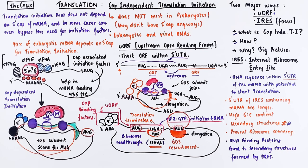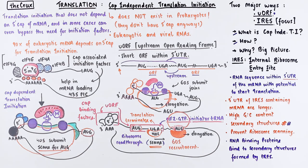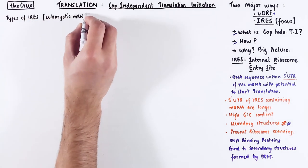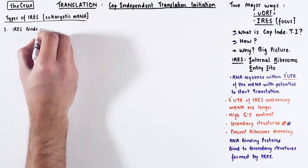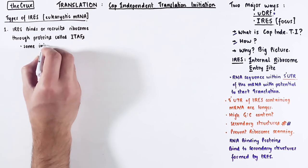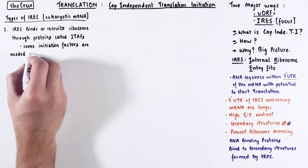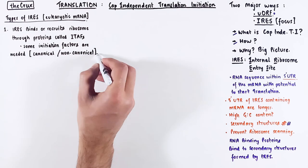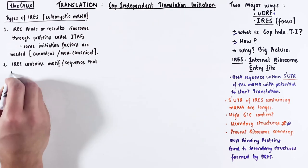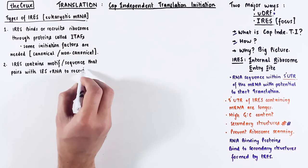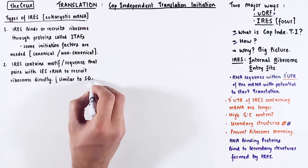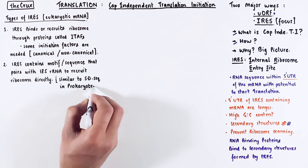IRES exists in both eukaryotes and viruses. The first type of eukaryotic IRES can recruit ribosomes through proteins called ITAFs. In these types of IRES, sometimes additional initiation factors are needed, and these factors can either be canonical or non-canonical. The second type of IRES contains motifs or sequences that pair with the 18S ribosomal RNA in the 40S subunit directly, and therefore recruit it. This second type of IRES is similar to the function of the Shine-Dalgarno sequence seen in prokaryotes.